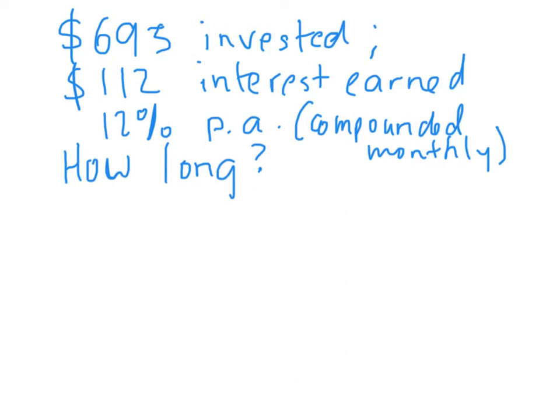So, like we would do with any problem, really, is we start with the formula, and I'll use this form of the formula, which is that A is equal to the principle outside of 1 plus the rate to the power of t for time.